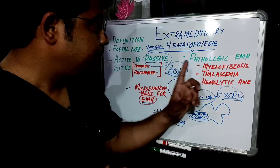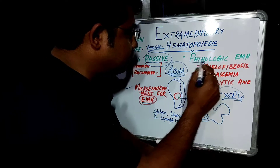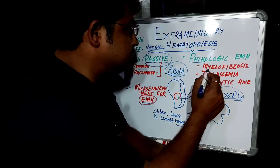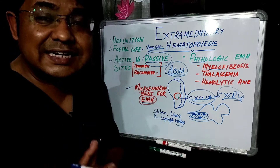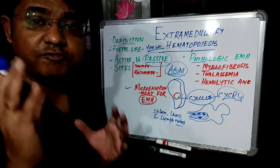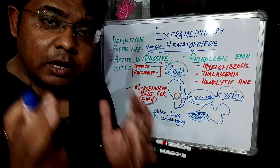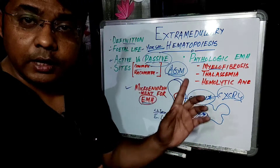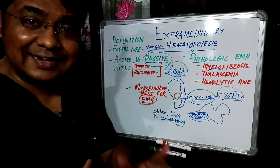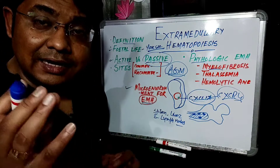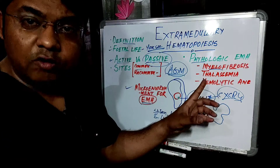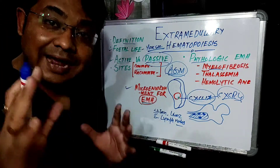The most important pathological cause of extramedullary hematopoiesis is myelofibrosis. In myelofibrosis, there is formation of fibrous tissue within the bone marrow along with gradual depletion of all hematopoietic elements, resulting in less hematopoiesis in bone marrow. In that case, other organs like the liver and spleen start to produce blood elements, so the extramedullary hematopoiesis occurring in myelofibrosis is pathological.